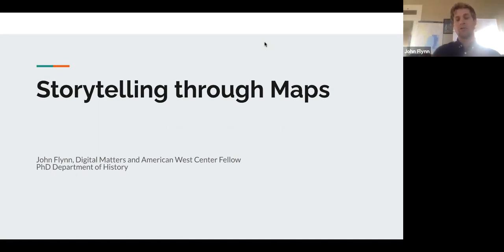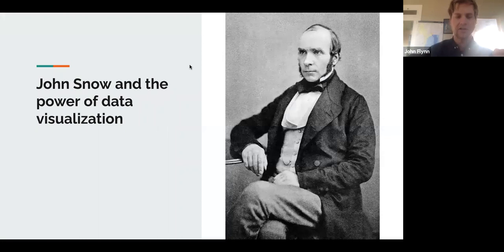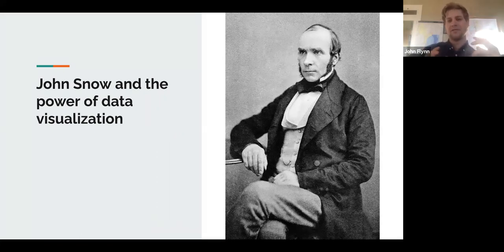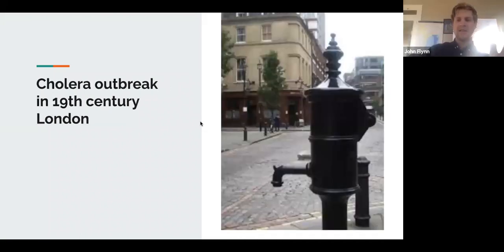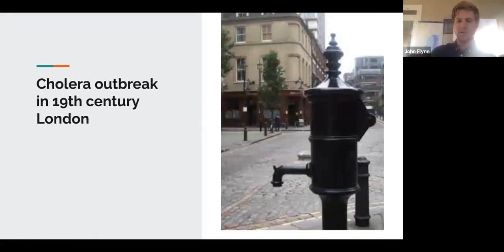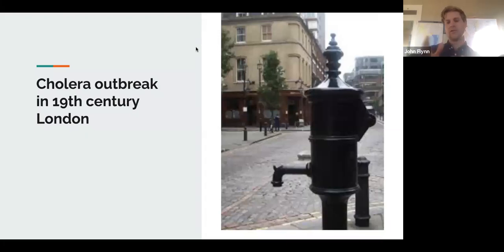When we're talking about storytelling through maps, I want to first talk about a really famous example of the power this can have. This comes from John Snow — and unfortunately, it's not the Game of Thrones John Snow. It's the story of a 19th century physician working during the cholera outbreaks in London.